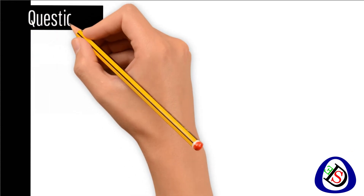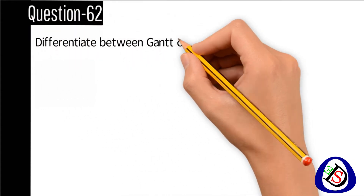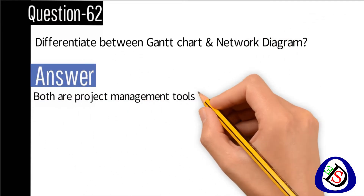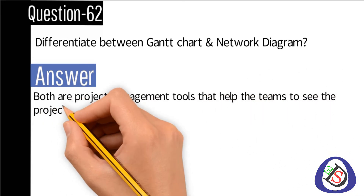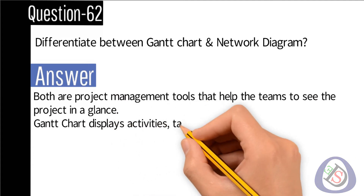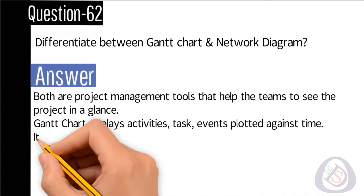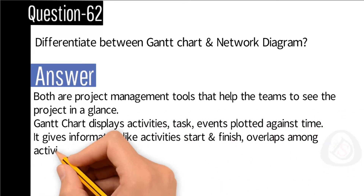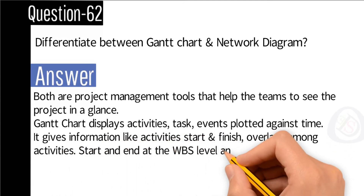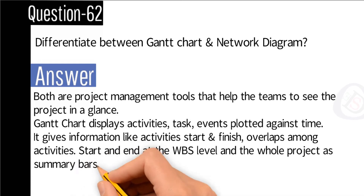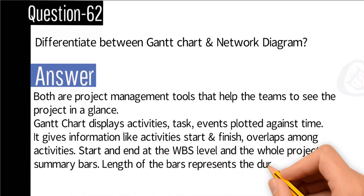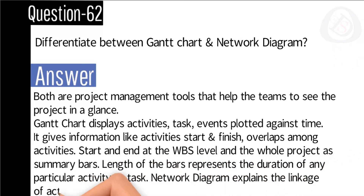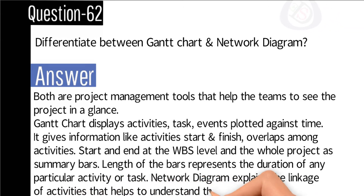Question number 62: Differentiate between a Gantt chart and a network diagram. Answer: Both are project management tools that help the team see the project at a glance. A Gantt chart displays activities, tasks, and events plotted against time, showing start and finish dates, overlaps, WBS-level summaries, and bar lengths representing durations. A network diagram explains the linkage of activities to help understand the flow of work.